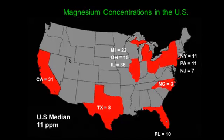Magnesium concentrations follow a similar pattern. Where you have a lot of alkalinity, you tend to have a lot of magnesium, with the exception of Florida. Northern Florida tends to have a fair amount of magnesium in their water, similar to what you'd find in Illinois, Ohio, or Michigan. South Florida, on the other hand, tends to have very low levels of magnesium — lots of calcium, very little magnesium. And again, where you have states that have low alkalinity, you have low magnesium levels.